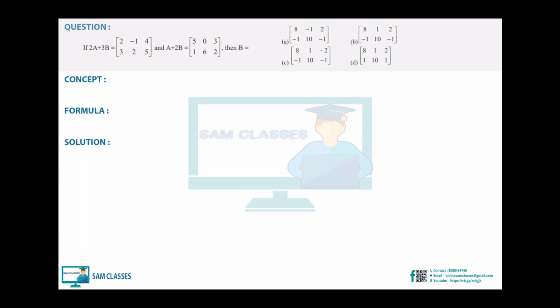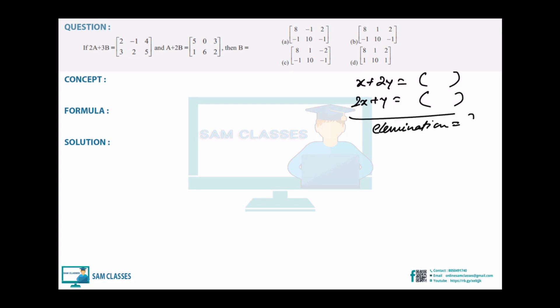Looking at this first question, you might say we can do this very simply — they have done very similar questions like this in linear equations in two variables, like when you have x + 2y = something and 2x + y = something, and you use elimination methods. Same thing here — treat the matrices as variables.